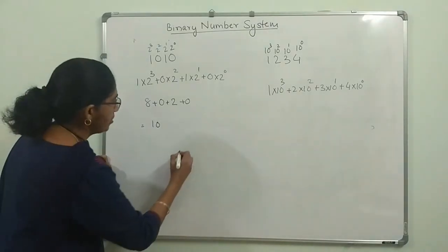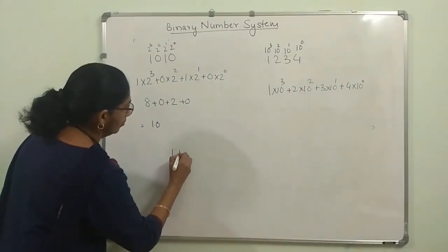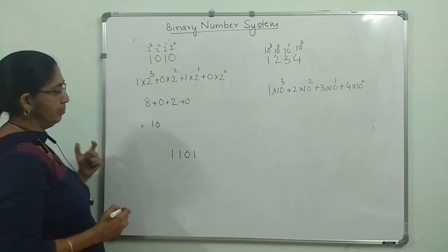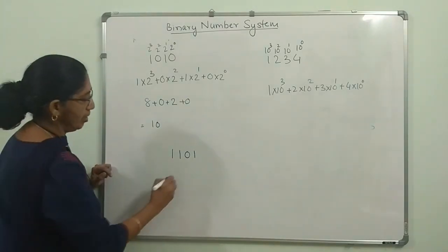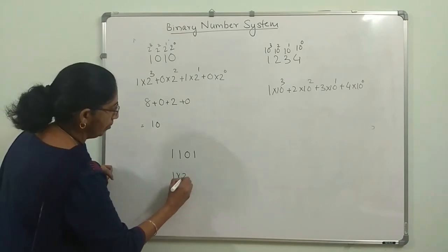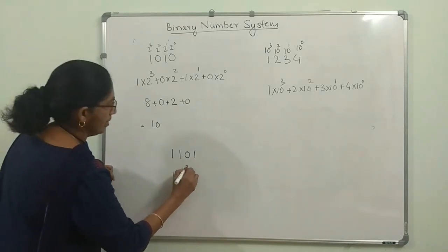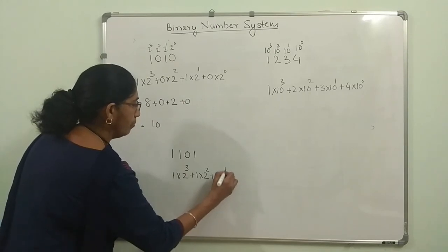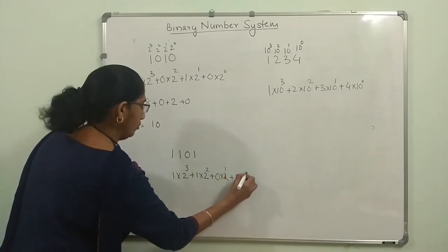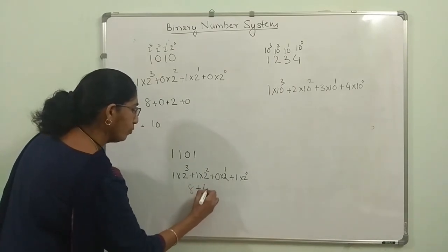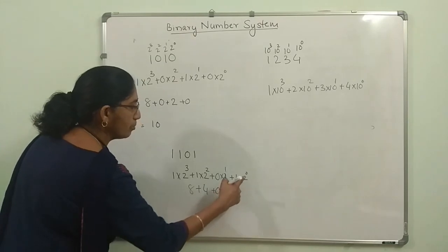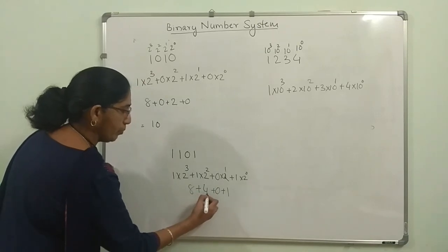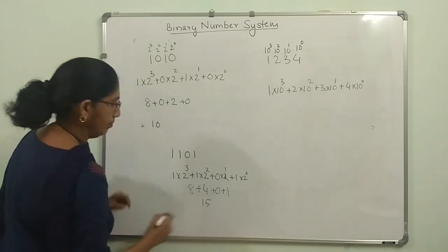Please try this number — make the binary conversion. For binary 1101, it will be: 1 × 2³ + 1 × 2² + 0 × 2¹ + 1 × 2⁰ = 8 + 4 + 0 + 1 = 13.